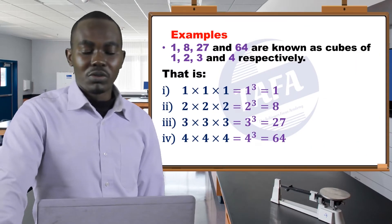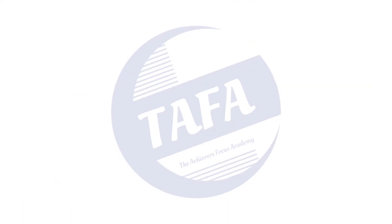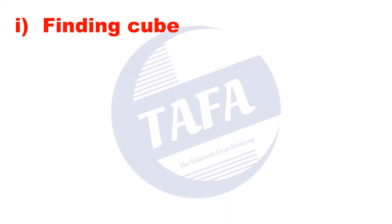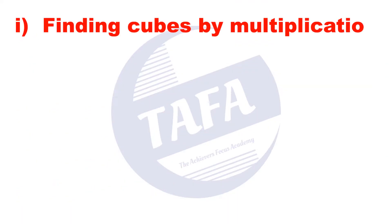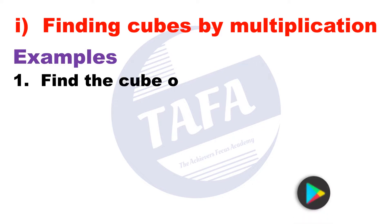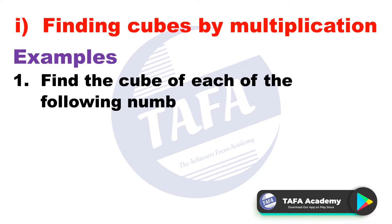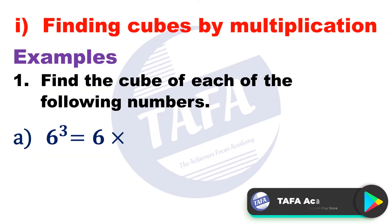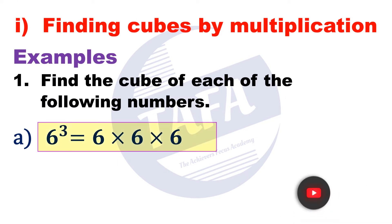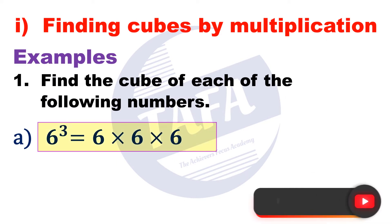Let's look at how we can find cubes of numbers by multiplication. For example, find the cube of the number 6. The cube of 6 will be given by 6 times 6 times 6, which equals 216.